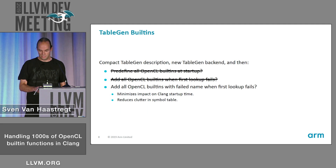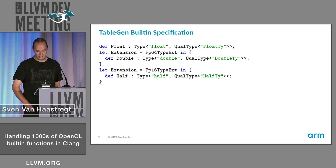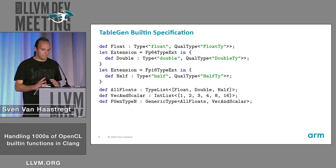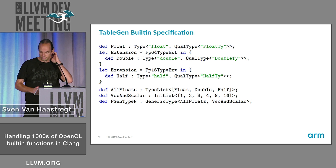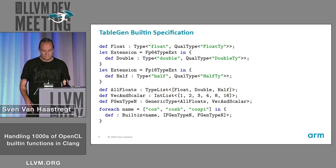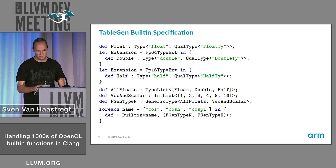That's the solution we are settling on. Here is an example of the TableGen file. We define the different data types, guarded by extensions wherever needed. Then we combine these into lists so that we have the Cartesian product of the types and different vector sizes. And then we define some built-ins — here you can see three built-ins defined with the same function signature, so it's nice and compact.